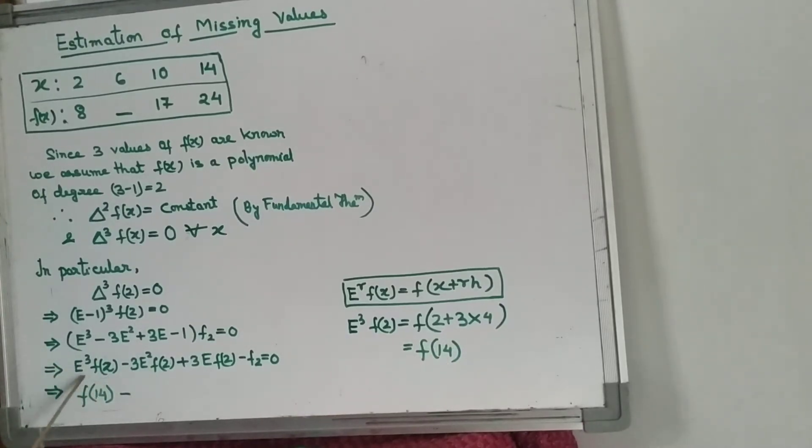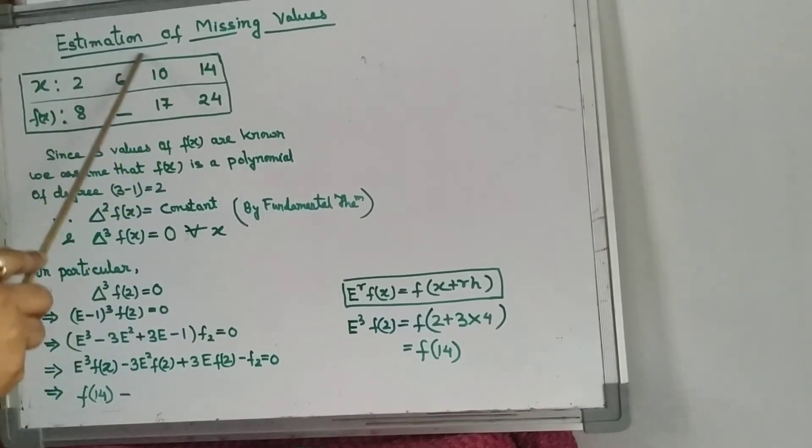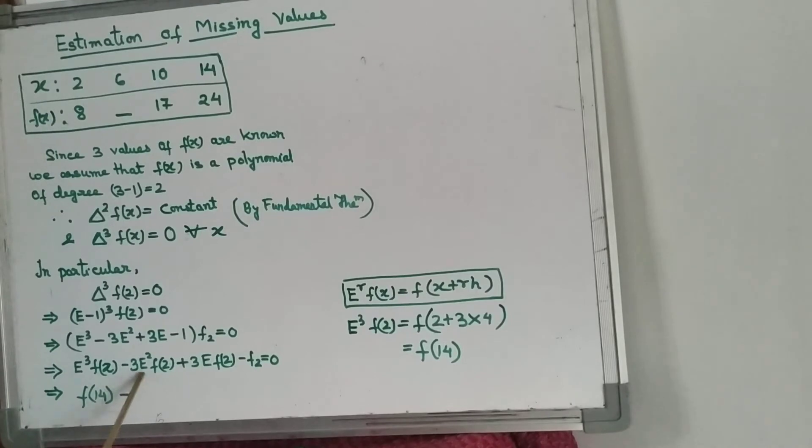We have to write here E^3 f(2) equals f(14). Look here: that means f(2), when we apply E operator over this, it will first jump here, then here, then here—three times. So it will become f(14). Similarly, we apply E operator twice over f(2).